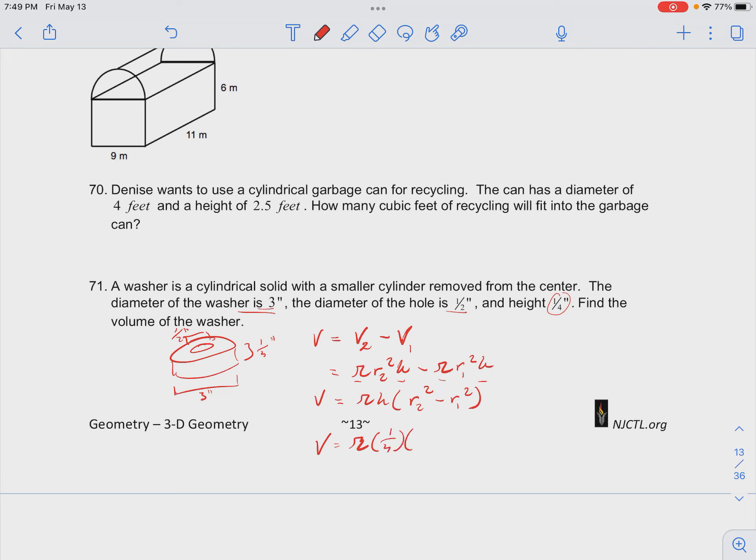Then we have r₂ is going to be half of the diameter, so that's 3/2 squared, minus r₁ is 1/2, so half of that is 1/4 squared.